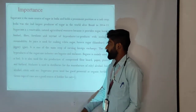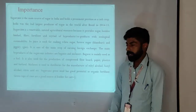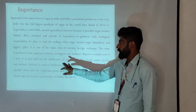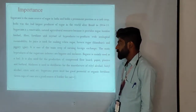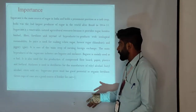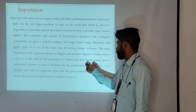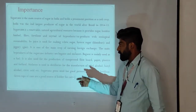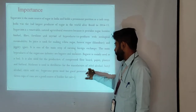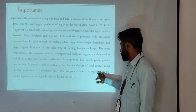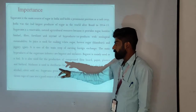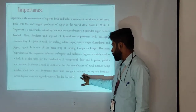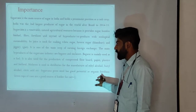The main byproducts of the sugar cane industry are bagasse and molasses. Bagasse is mainly used as a fuel and also for production of compressed fiber board, paper, plastic, and furfural. Molasses is used for distillation and for the manufacturing of ethyl alcohol, butyl alcohol, citric acid, etc. Sugar cane pressed mud has good potential as organic fertilizer.